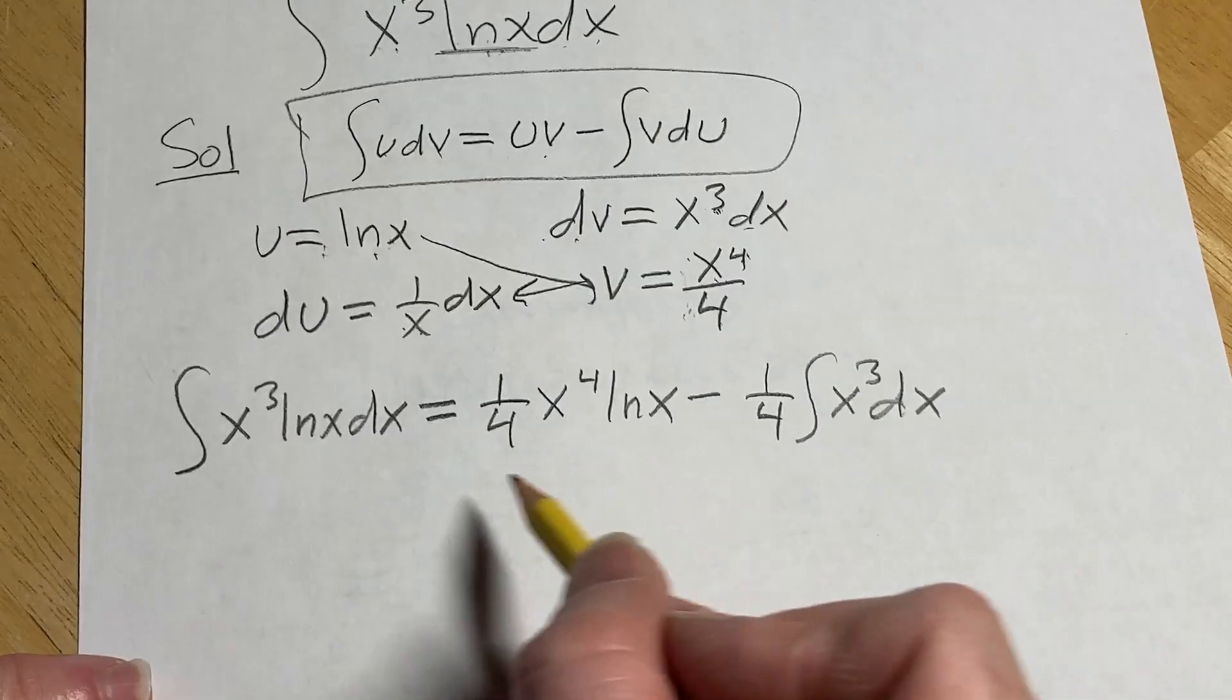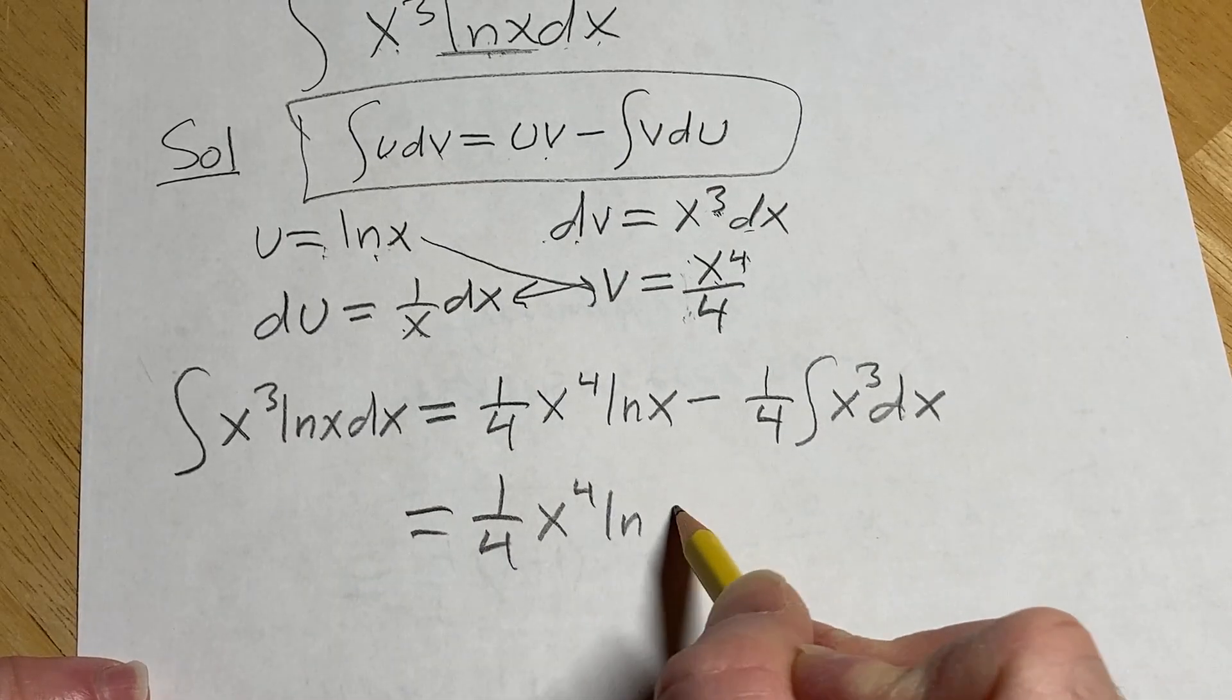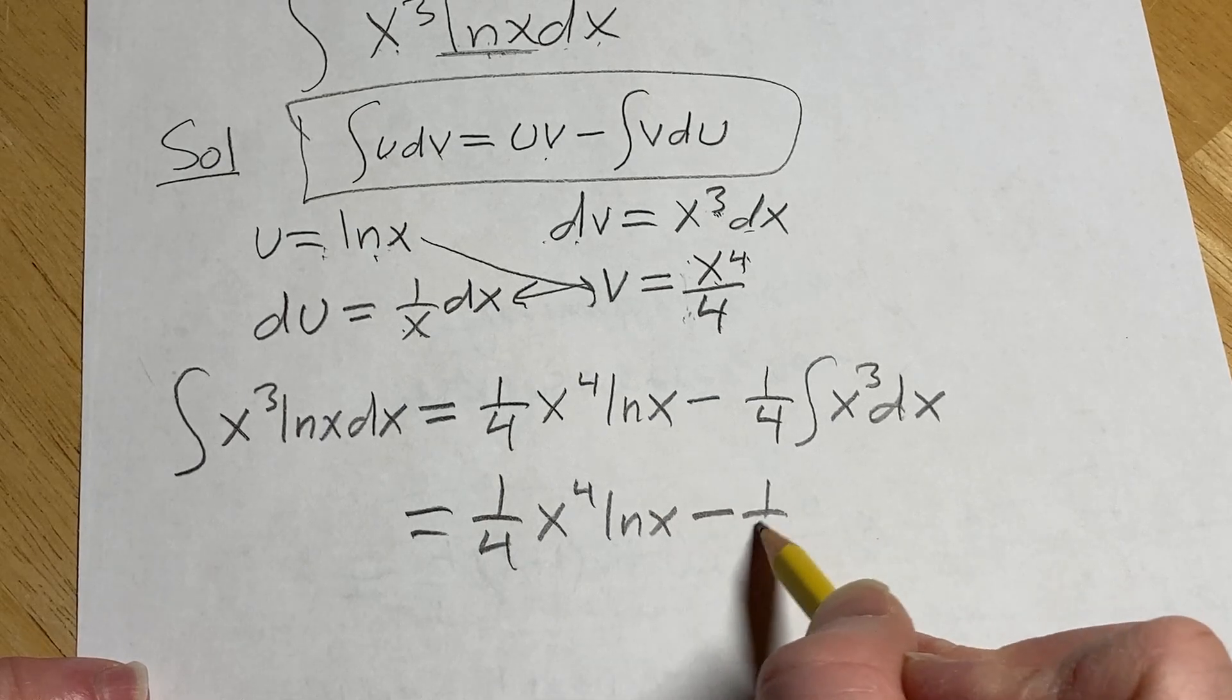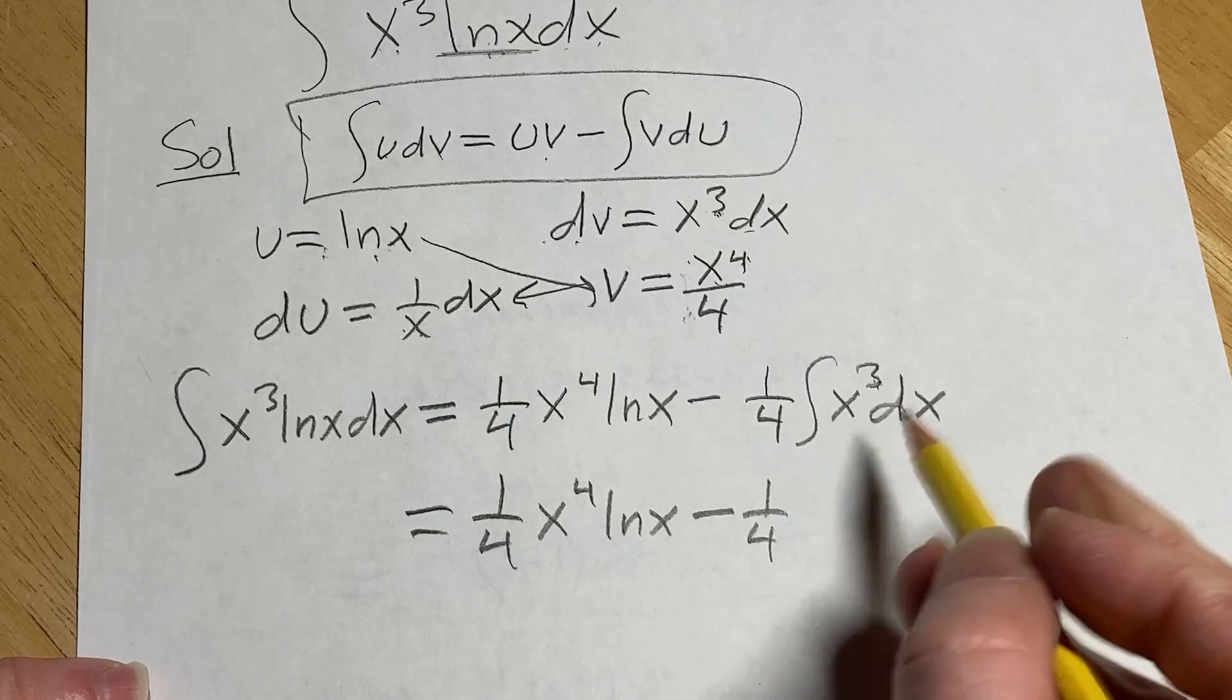All right now we're ready to continue so this is equal to 1 4th x to the 4th lnx minus 1 4th. Here we can integrate we add 1 to the exponent so it'll be x to the 4 over 4.